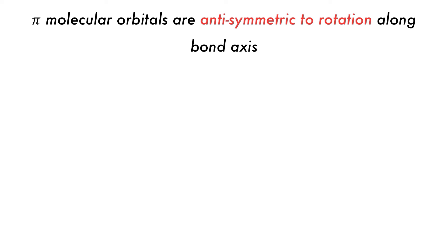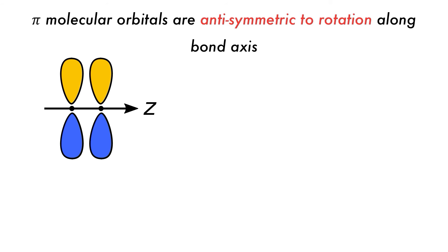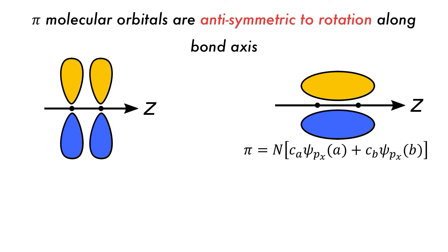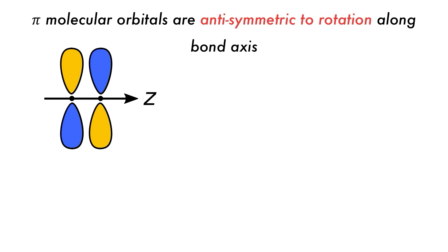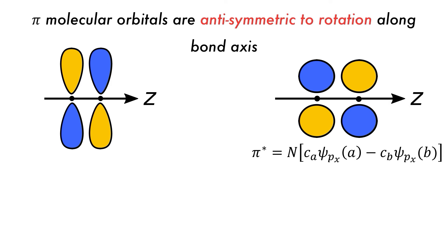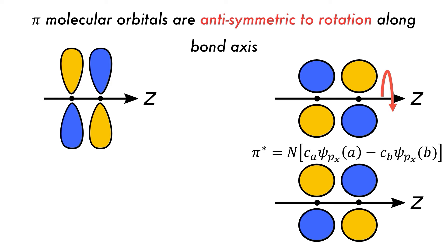What about pi orbitals? Pi molecular orbitals have a change of sign when rotated about the bonding axis. If there are two in-phase P orbitals perpendicular to the bonding axis, they will overlap to form a pi bonding molecular orbital. If these orbitals are then rotated around the Z axis, or bonding axis, they will change sign, confirming that they are pi orbitals, as the yellow and blue regions have interchanged. The same thing will happen if there are two in-phase P orbitals — if these orbitals are rotated around the Z axis, or the bonding axis, they will change sign, confirming that they are pi orbitals, as the yellow and blue regions have interchanged.